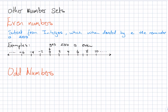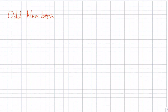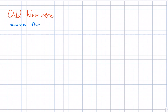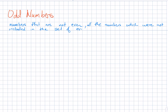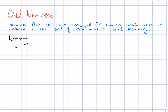Next, we move on to the set of odd numbers. The set of odd numbers are numbers that are not even, and they are also in the set of integers. Those integers which are not even are said to be odd. We can represent this on a number line by looking at the numbers negative 7, negative 5, negative 3, negative 1, 1, 3, 5, 7, 9 onwards.